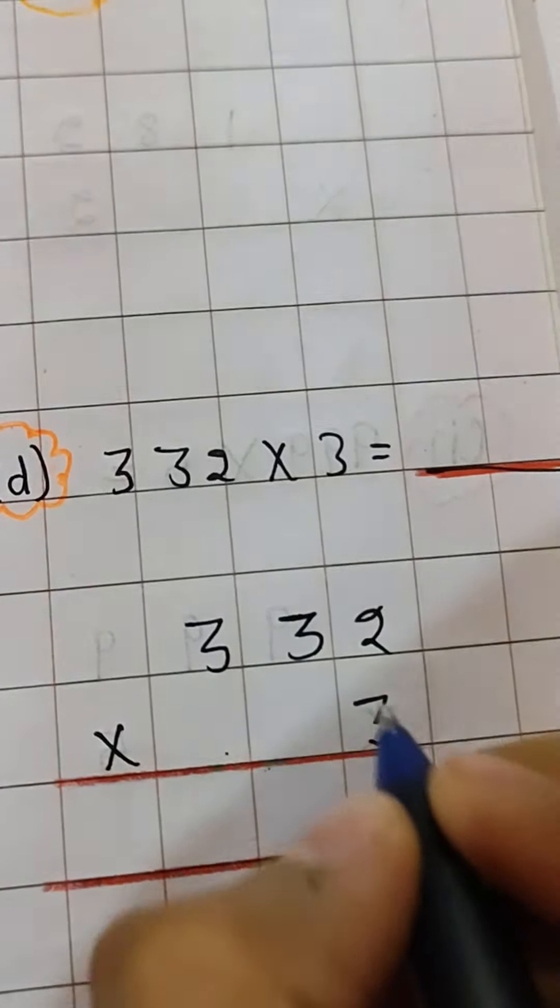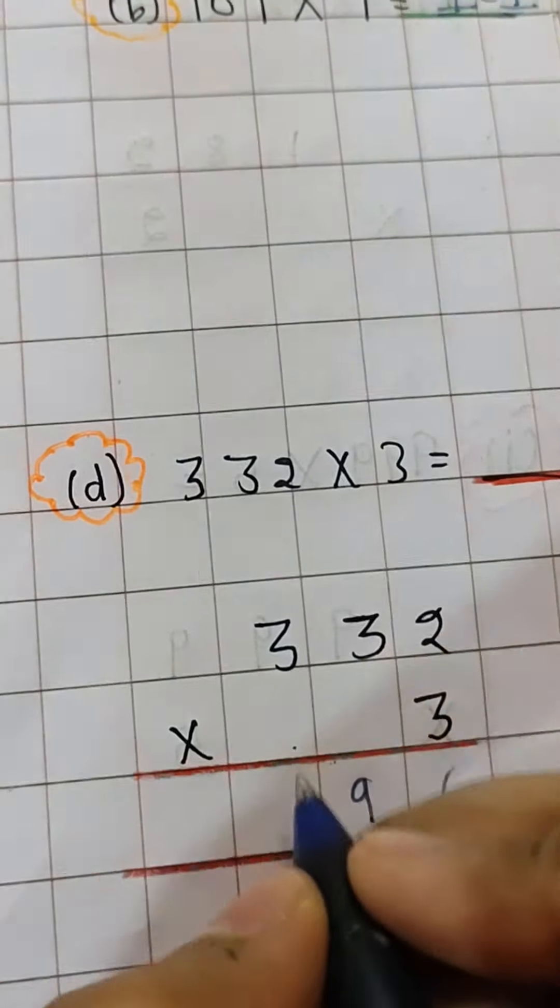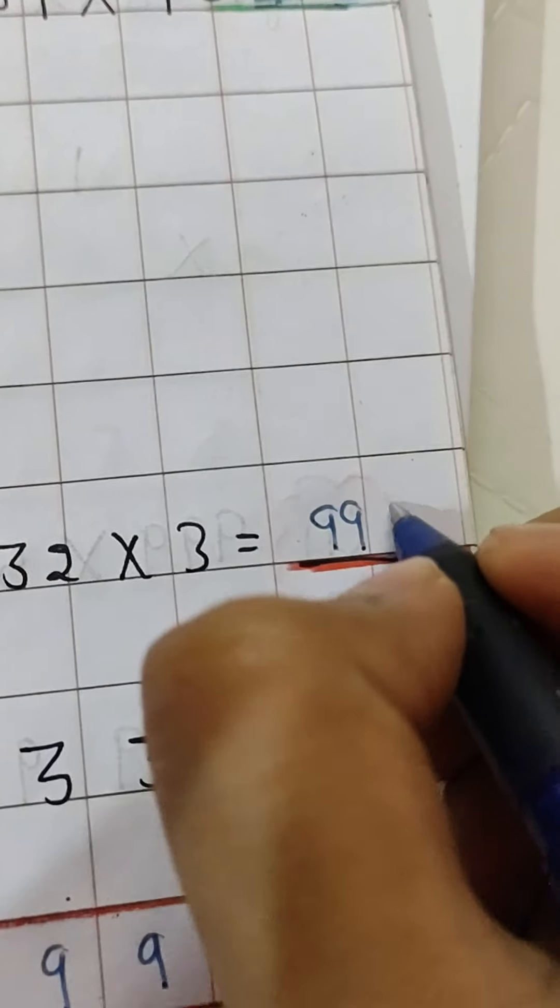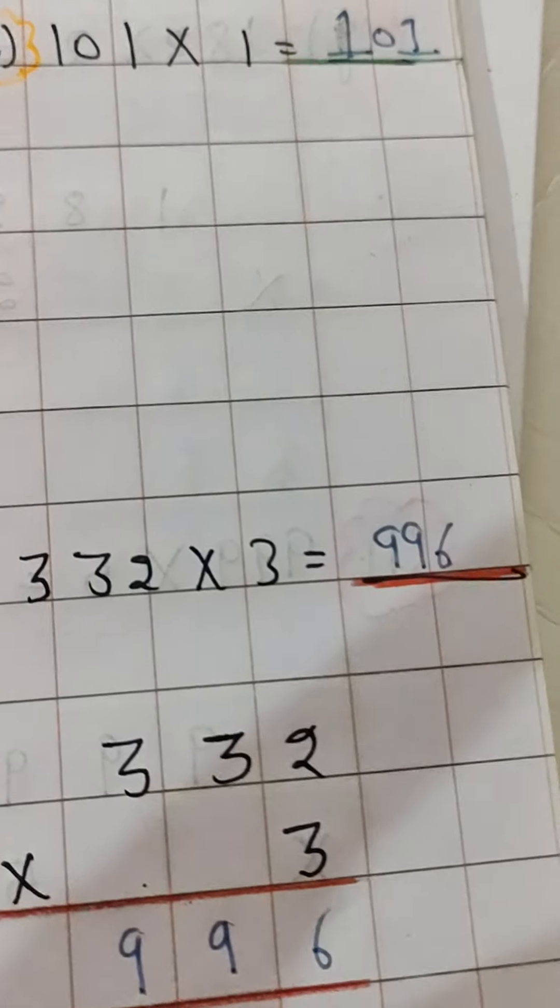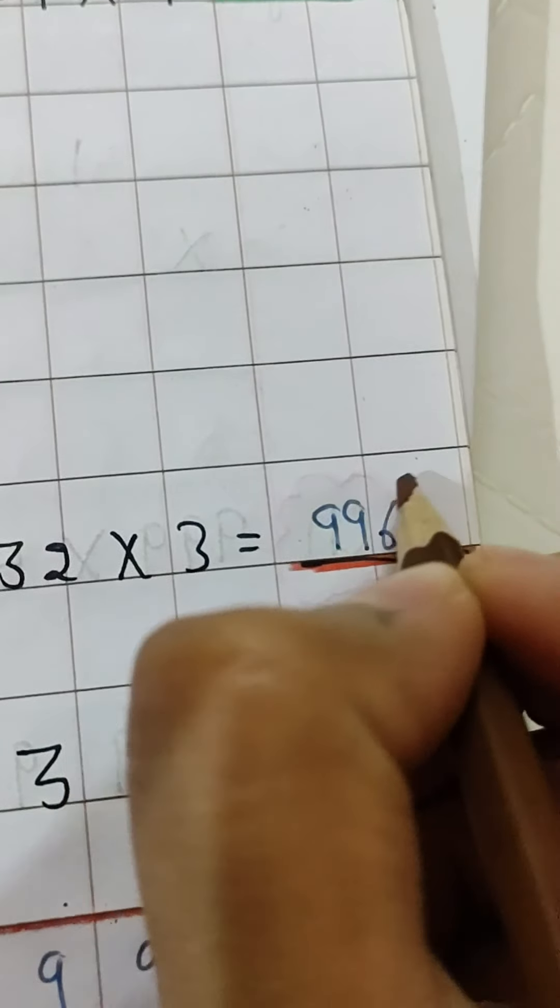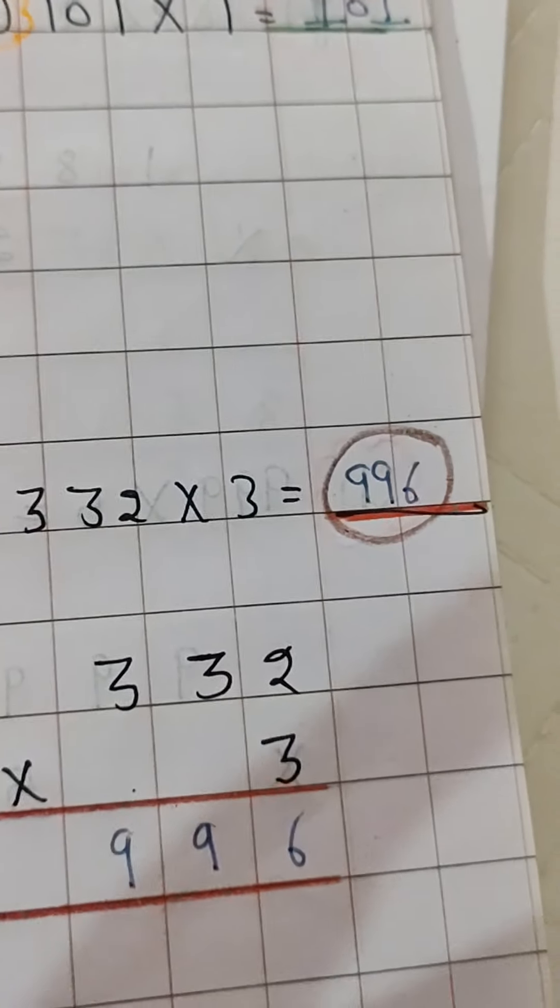Then you will multiply this 332 multiply by 3. 3 times 2 is 6, 3 times 3 is 9, and 3 times 3 is 9. So your answer is 996. Now this comes in between 500 to 3000, so you can circle this number.